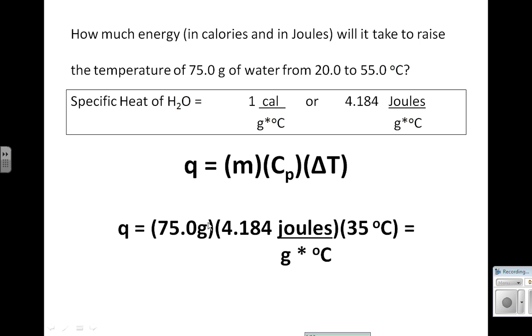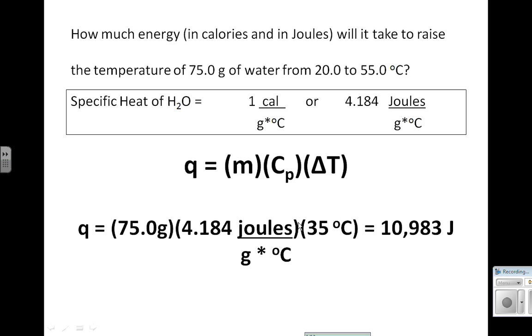You can see grams over grams cancels out, degrees Celsius over degrees Celsius cancels out, and we are left with joules as our unit of measurement. Multiplying all that together, we get an answer of 10,983 joules.